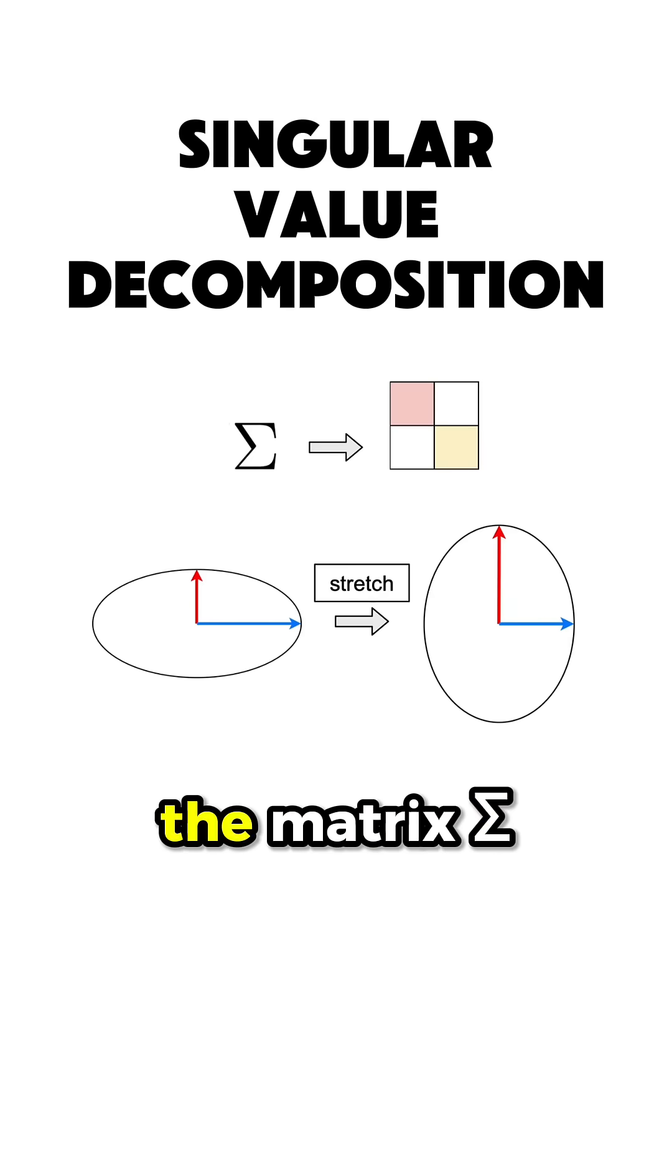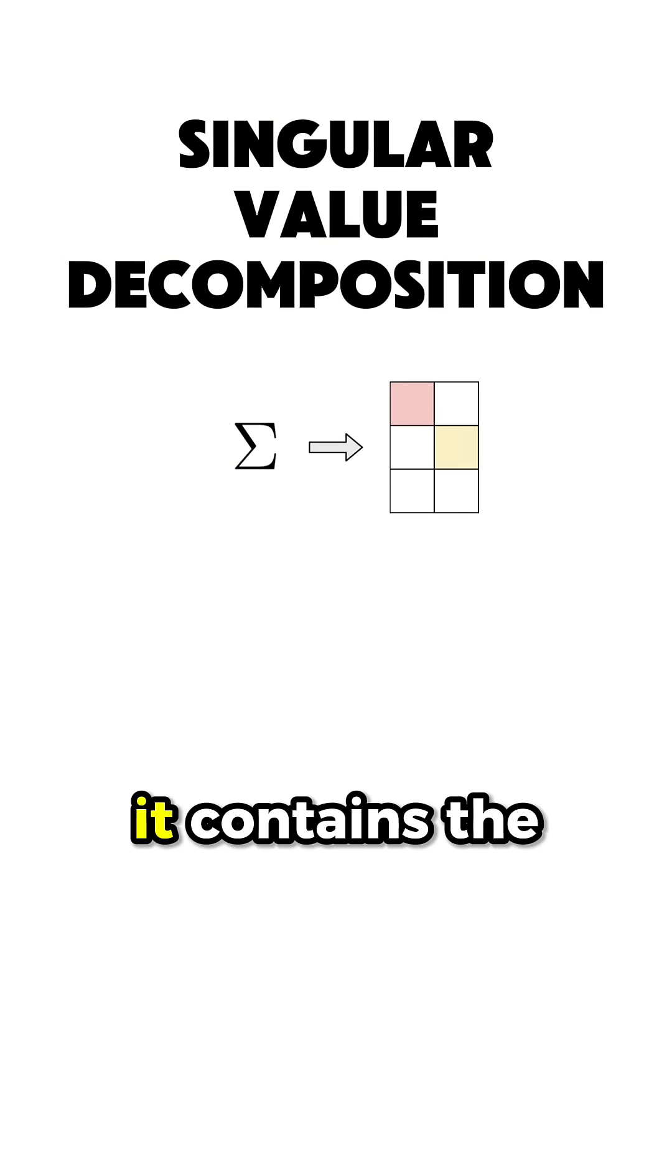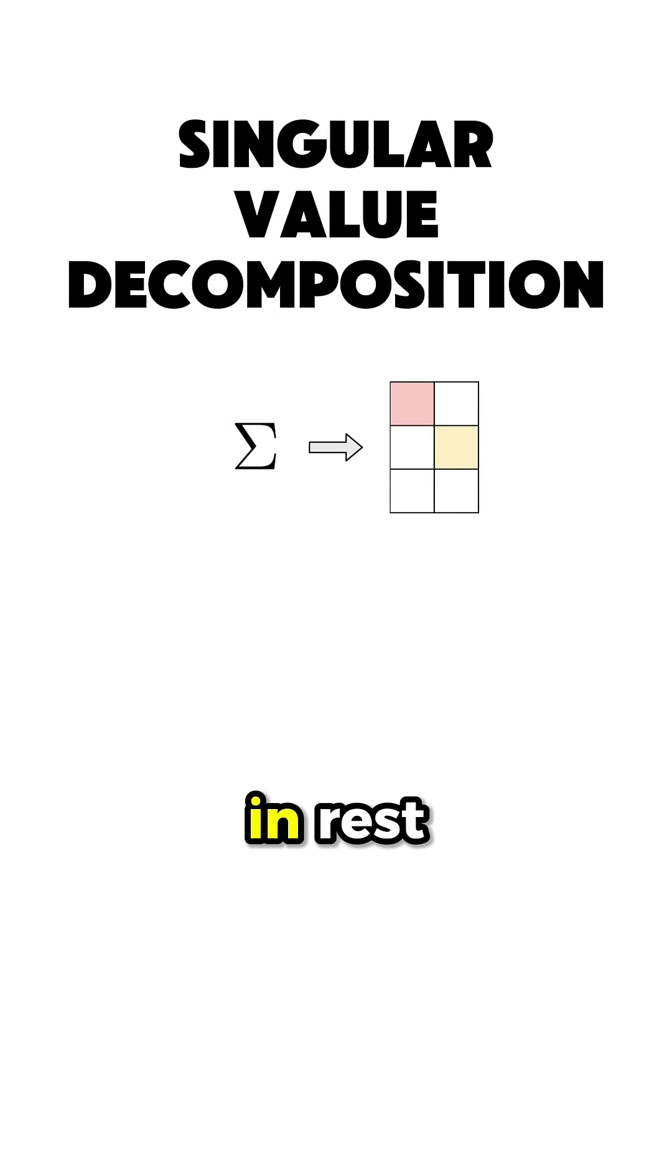However, we said that the matrix sigma is a rectangular diagonal matrix, and thus it contains the singular values on the main diagonal of the square matrix containing the rectangular matrix, and zeros in rest.